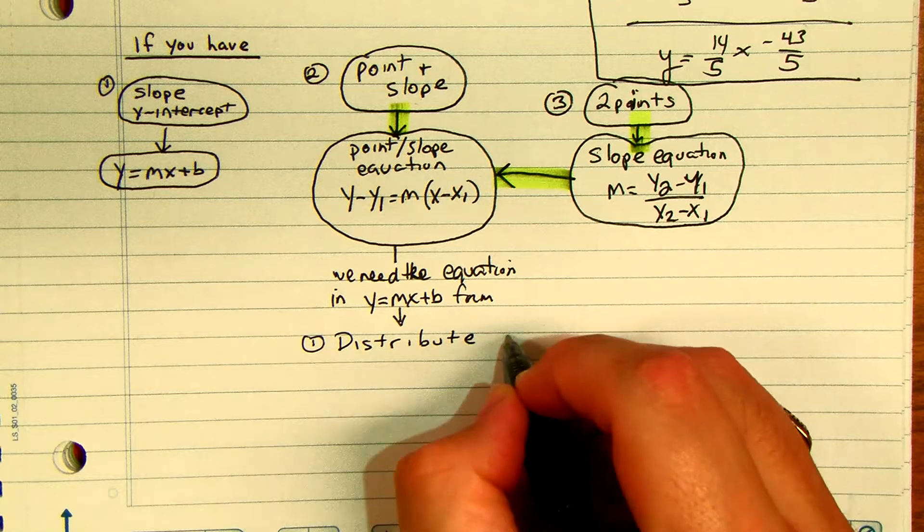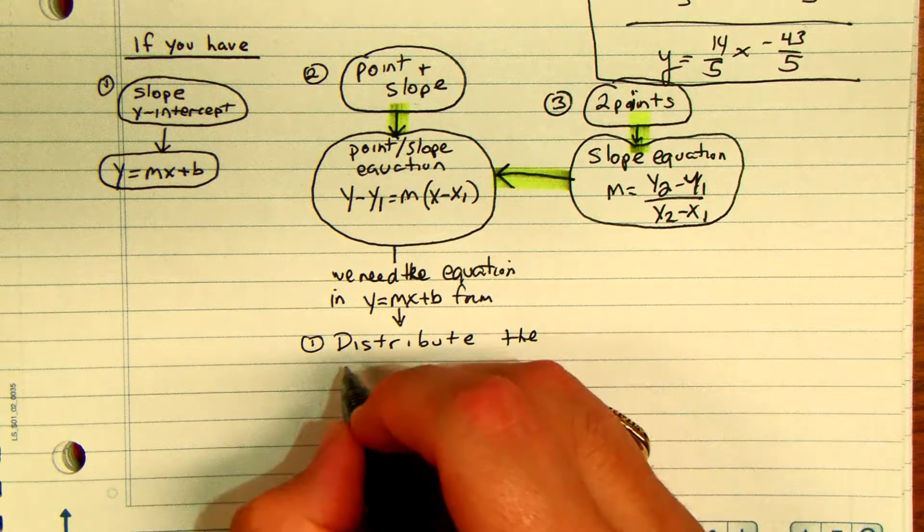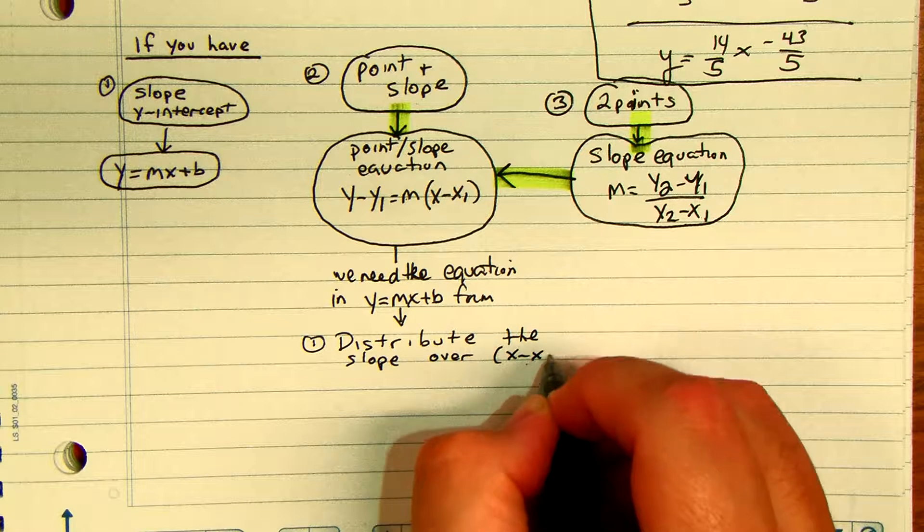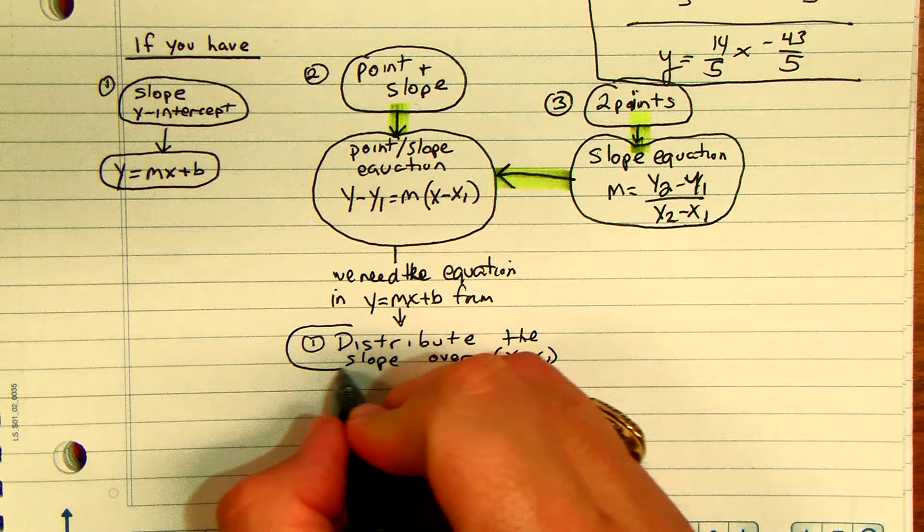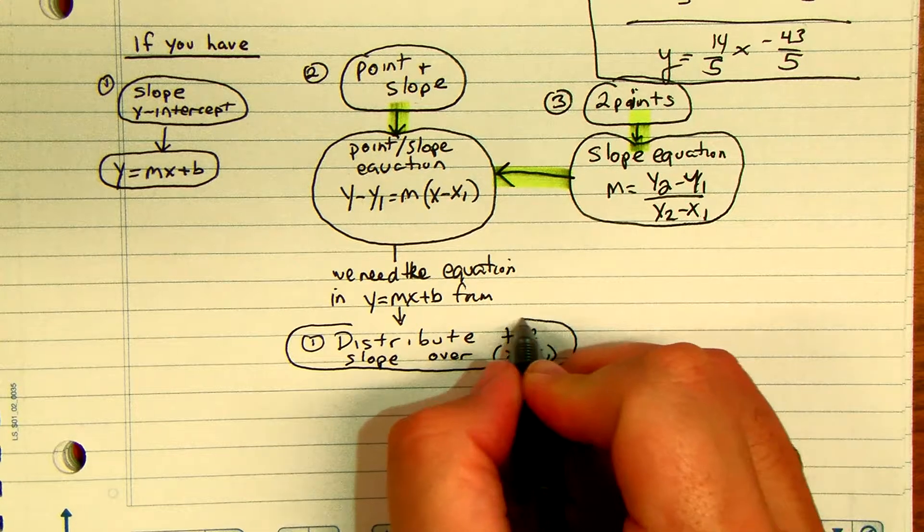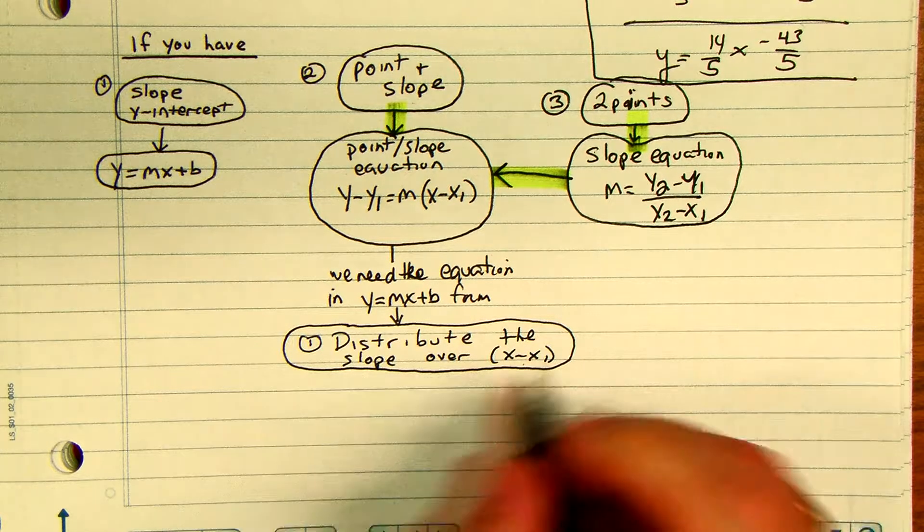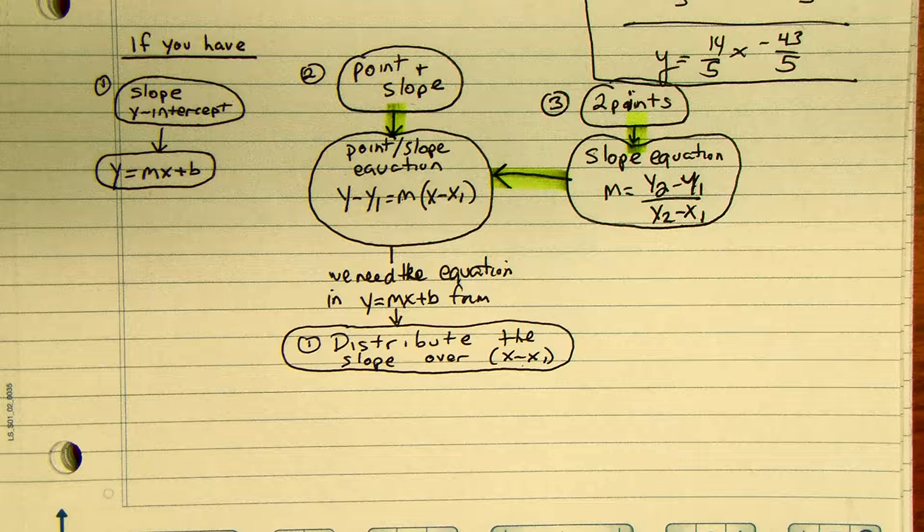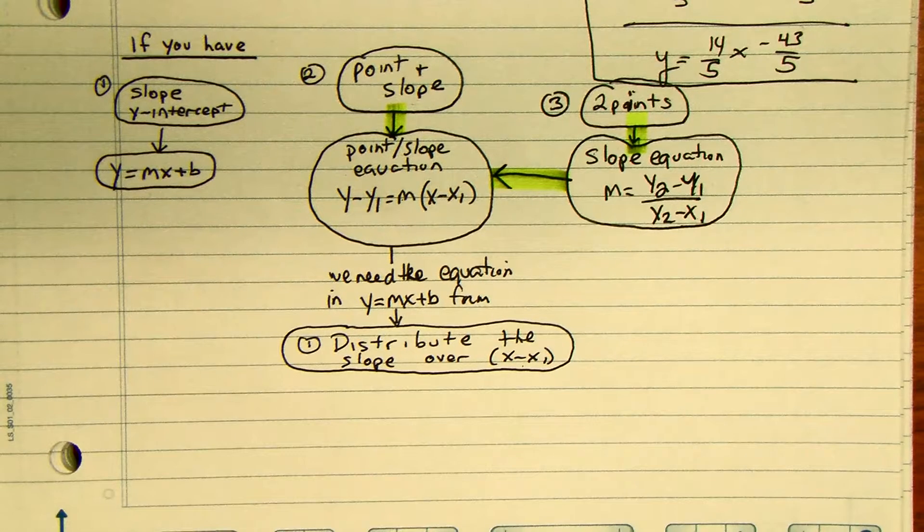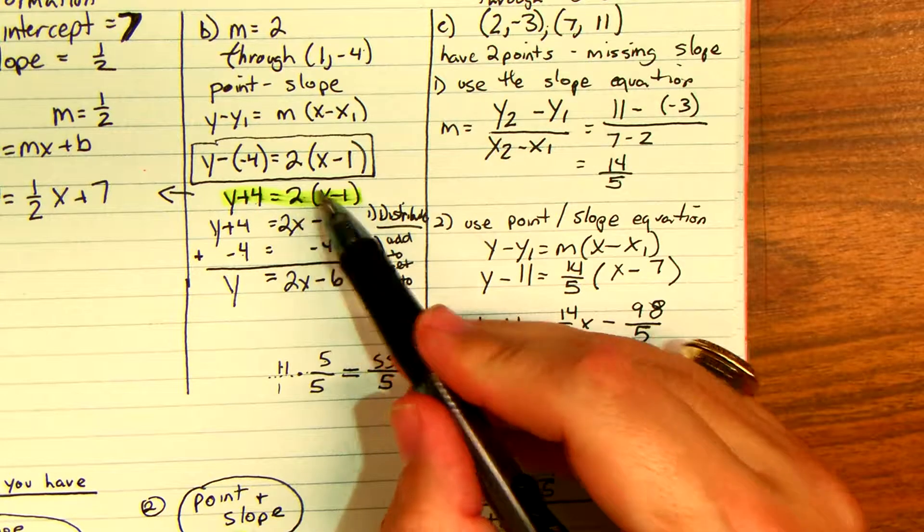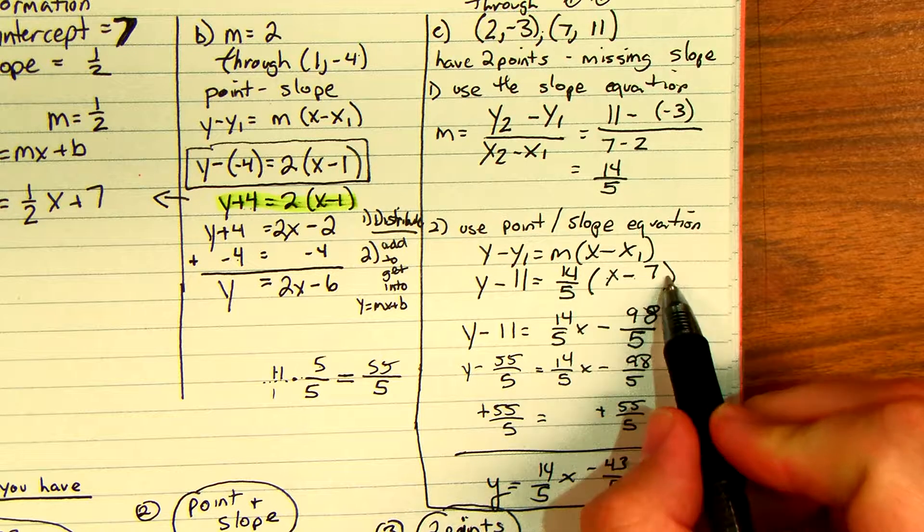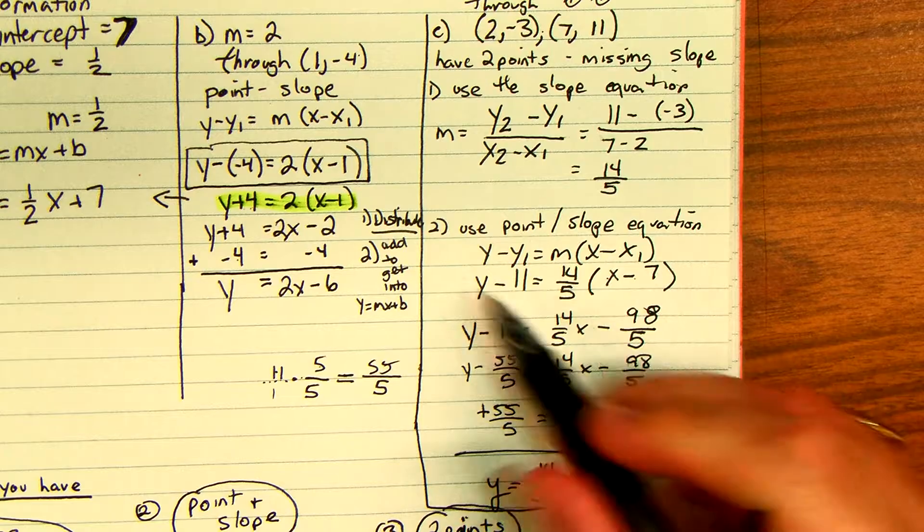Distribute the slope over x minus x1. So that's the first step that you're going to actually work on. You're going to distribute like what we did up here - we distributed the 2 to the x minus 1 so it was 2x minus 2. Here we distributed the 14 over x minus 7. That was the first step that we always took. The first step is always that distributive step.